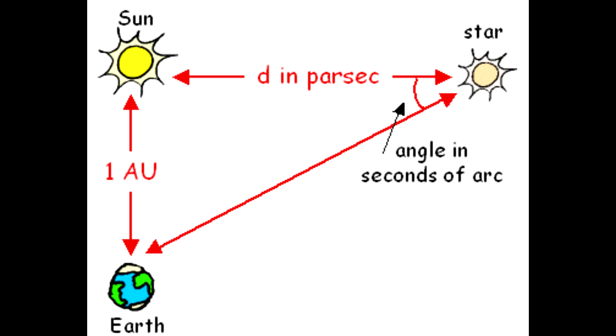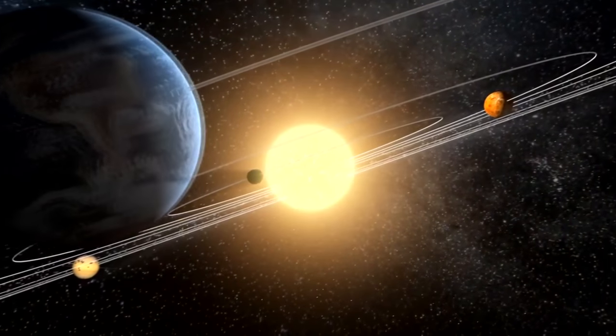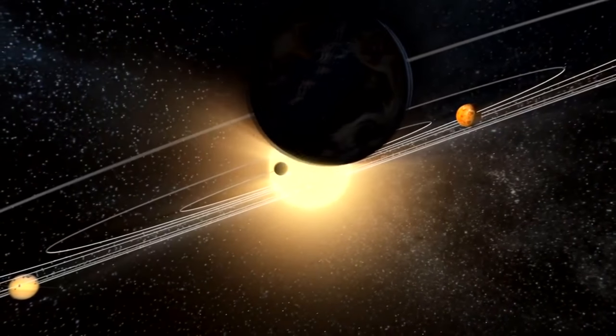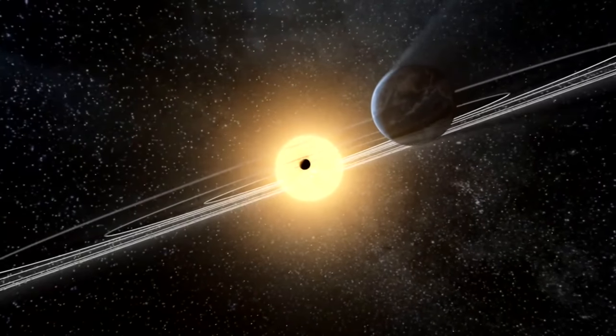Parsec, 3.26 light years, is defined as the distance for which the annual parallax is one arc second. Annual parallax is normally measured by observing the position of a star at different times of the year as the earth moves through its orbit.